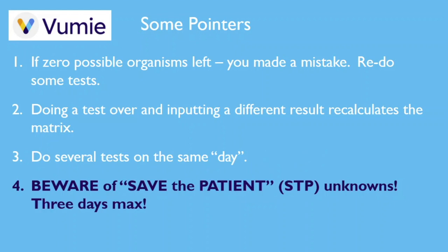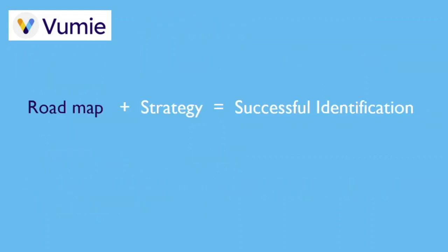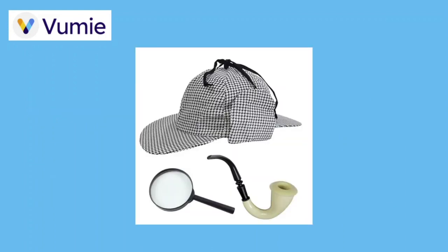You may not have a choice of how long you are given to complete your unknown. If your unknown was assigned as a 'save the patient' or STP unknown, you will have to accomplish your identification in three days or less. So you have a roadmap for getting started identifying your gram-negative bacillus and a strategy for finishing the job. Happy hunting!